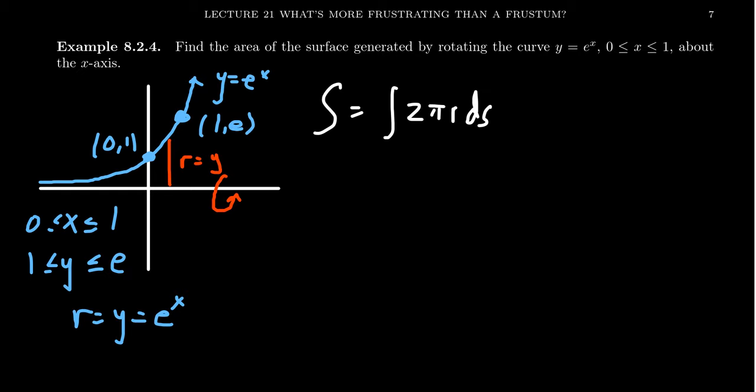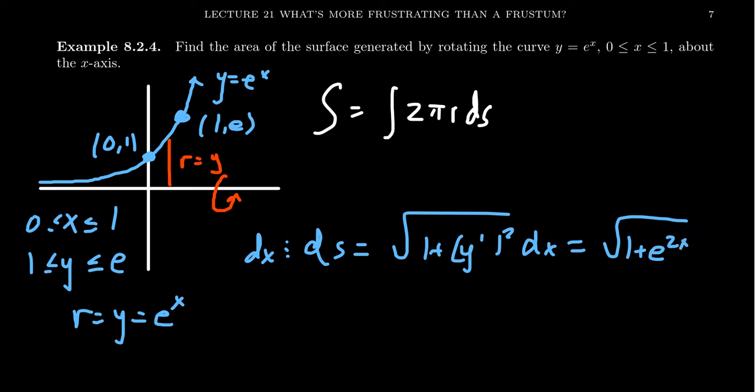If we take a dx approach, then our ds will look like the square root of 1 plus y prime squared dx, which would look like 1 plus e to the 2x dx, because y is e to the x. Notice if the radius is e to the x, you'd have an e to the x with this together, and I think that actually looks really good for us.